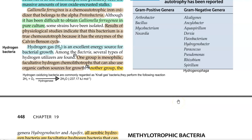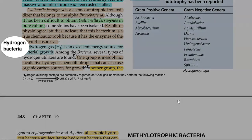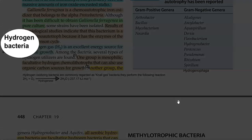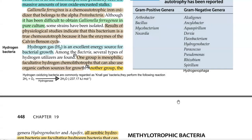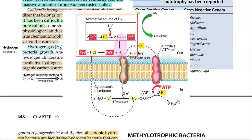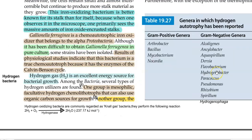In this screencast lecture, we are going to see about the chemolithotrophic group of bacteria, that is hydrogen bacteria. Already in the previous screencast video lecture, we have seen how much hydrogen is important in the primitive world, mainly to fuel the chemolithotrophic process in bacteria that evolved during the earlier period. Thus, hydrogen gas serves as an excellent source of energy for bacterial growth and metabolism.